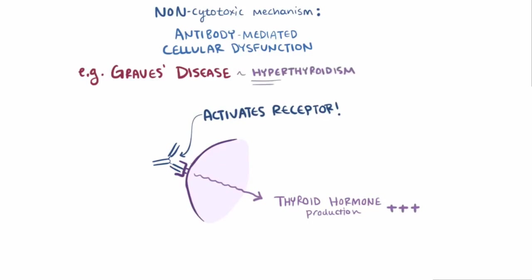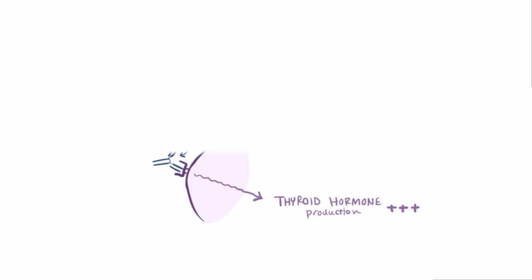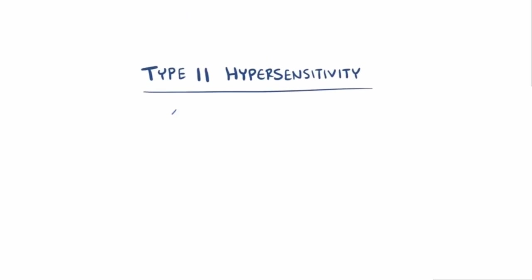And there you have it — a handful of different ways that antibody binding to cells can cause them to get destroyed or become less effective. The important things to remember about type 2 hypersensitivity is that they're antibody-mediated, they generally lead to cytotoxicity, and they're tissue-specific.